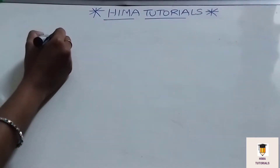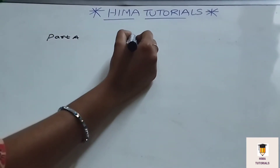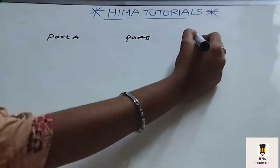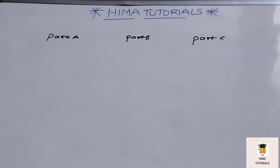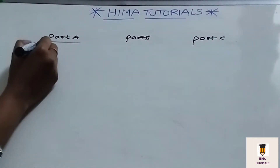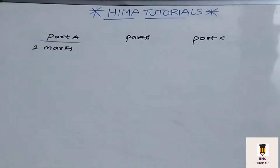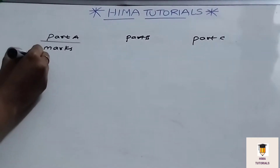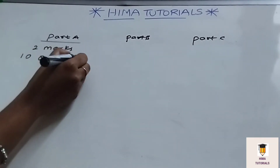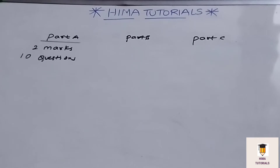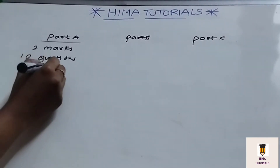There are a total of 3 parts: Part A, Part B, and Part C. In Part A, 2-mark questions will be given. There are a total of 10 questions and each question carries 2 marks, which means a total of 20 marks.